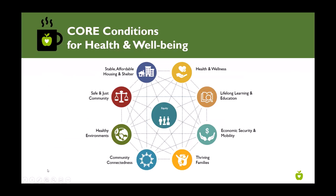When we say equitable health and well-being, we're talking about ensuring that there are opportunities for all people through all stages of life to experience these eight core conditions for health and well-being. Today we're focusing on stable affordable housing and shelter. You can see in this graphic how connected housing and shelter is to all the other core conditions — health and wellness, lifelong learning and education, economic security and mobility. Through these coffee chats, we try to understand where the points of intersection among these core conditions are and what we could be doing collectively to improve that.